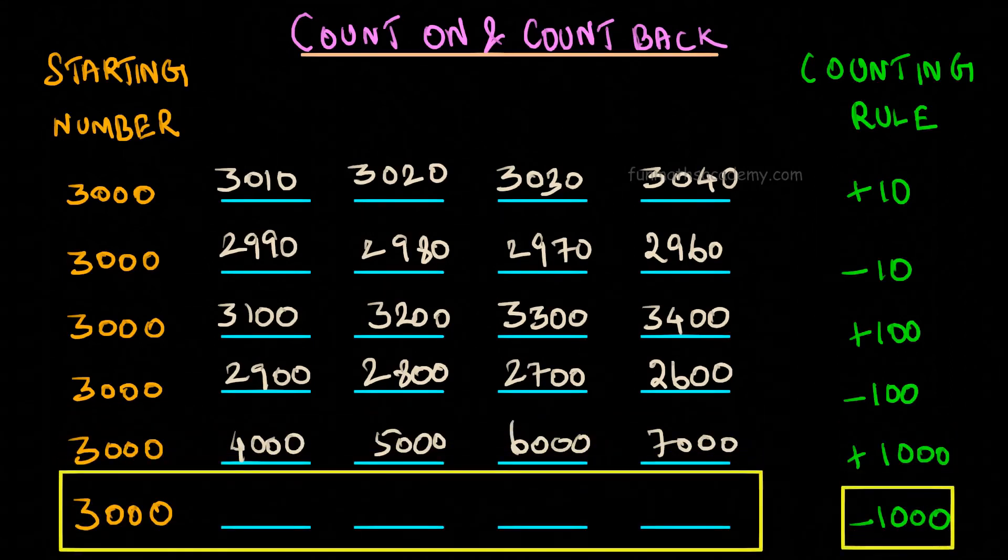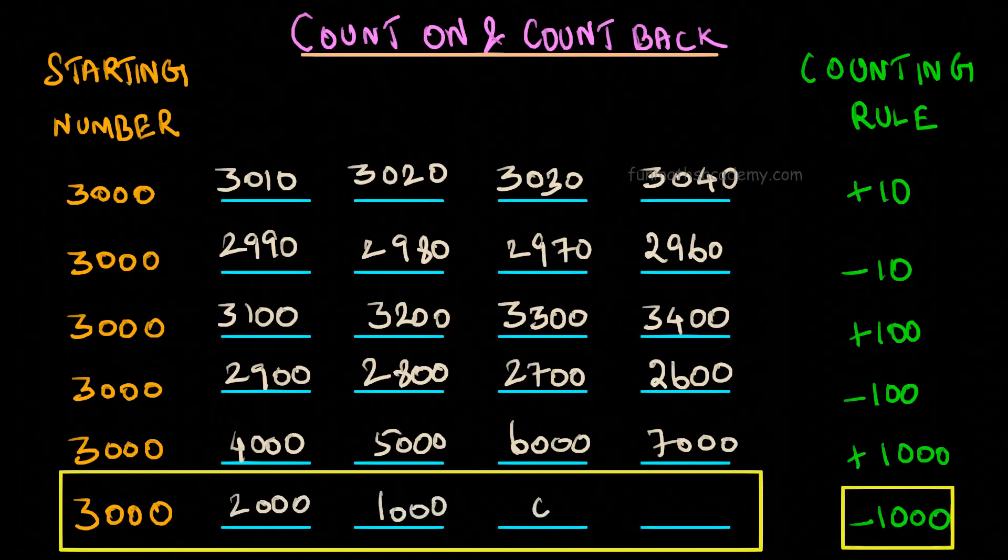When it is minus 1000, we will get 3000, 2000, 1000, 0 and minus 1000.